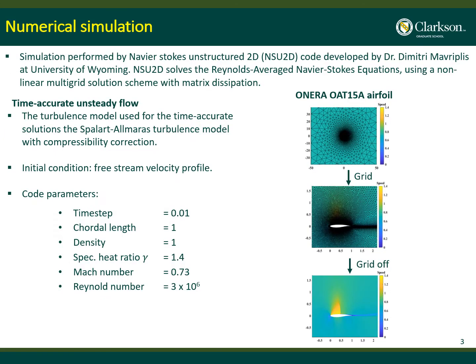To generate this time-accurate simulation we use the NAUS unstructured 2D code developed by Dr. Dimitri at the University of Wyoming. This code solves the Reynolds-Averaged Navier-Stokes equations using a multi-grid solution scheme with metric dissipation. It also uses the Spalart-Allmaras turbulence model with compressibility correction. In the lower part you can see the code parameters.